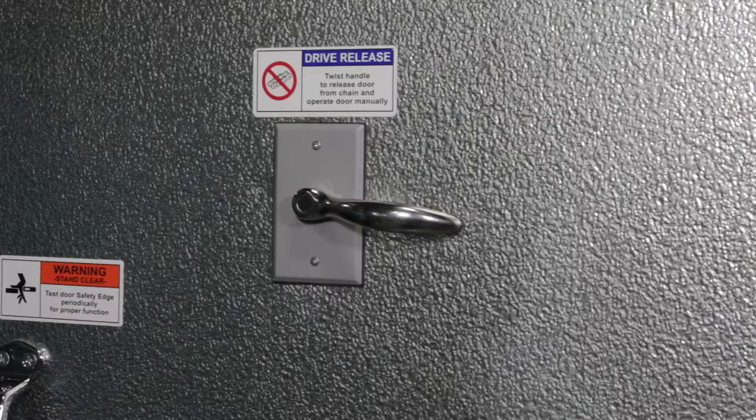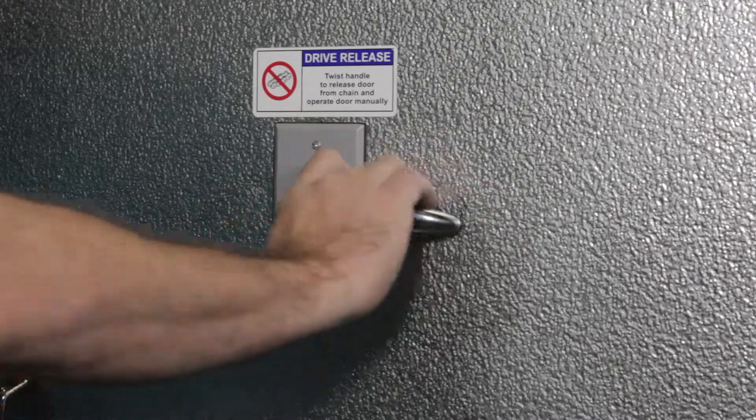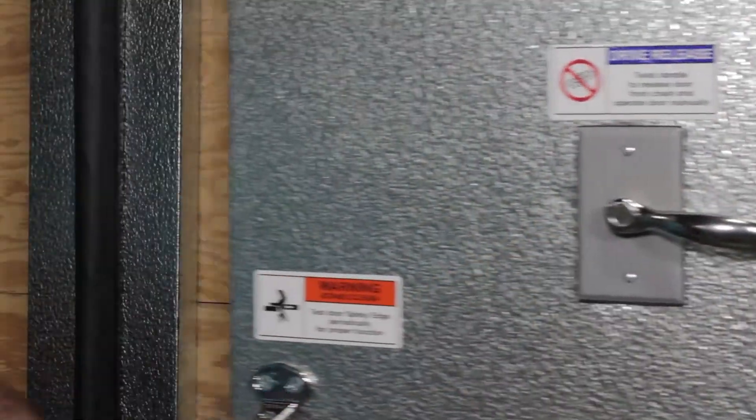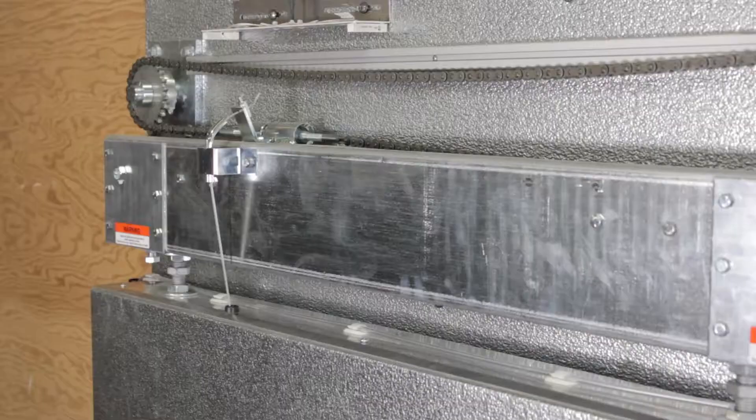Pull the drive release cable to release the door from the drive chain and manually slide the door to disengage the drive chain bullet from the drive release tube.